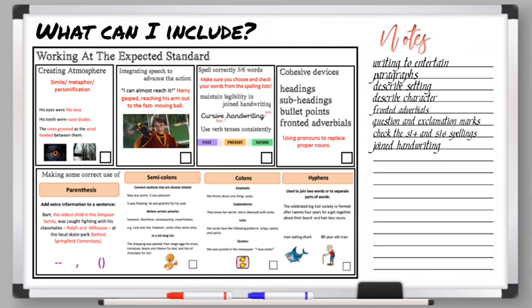Integrating speech to advance the action. Yes this is a perfect thing for this one. Again I have another video all about that. Use verb tenses consistently. If you're writing a story that happened in the past you have to make sure that all of your writing stays written in the past. The same goes for the present and future. Try not to mix the tenses up as you write your story. Cohesive devices we've talked about those ones in the previous slide.